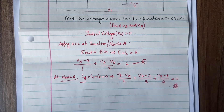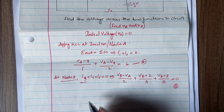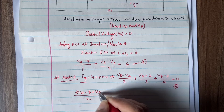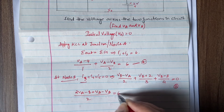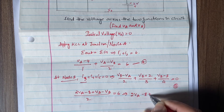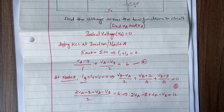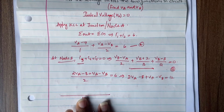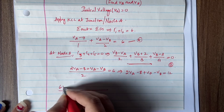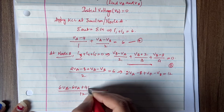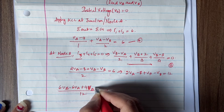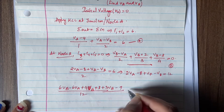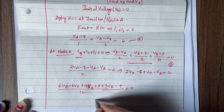Now let us simplify these equations. For the junction A equation, the LCM is 2, giving: 2Va − 8 + Va − Vb = 12, which simplifies to 3Va − Vb = 20. For the junction B equation, the LCM is 12, expanding to: 6Vb − 6Va + 4Vb + 8 + 3Vb − 9 = 0.